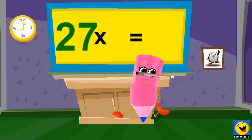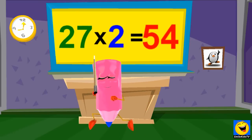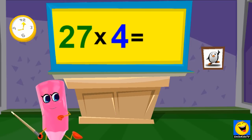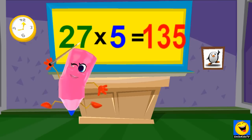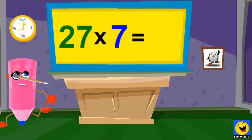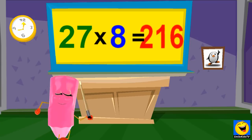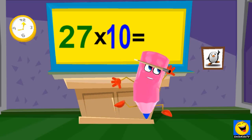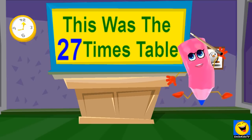27 times 1 is 27. 27 times 2 is 54. 27 times 3 is 81. 27 times 4 is 108. 27 times 5 is 135. 27 times 6 is 162. 27 times 7 is 189. 27 times 8 is 216. 27 times 9 is 243. 27 times 10 is 270.